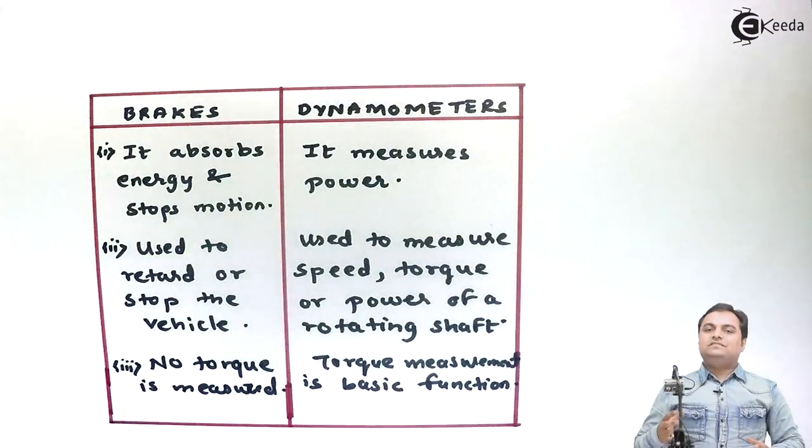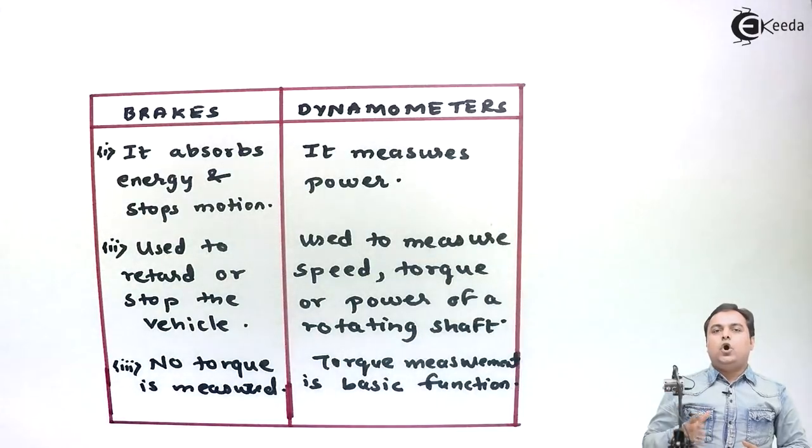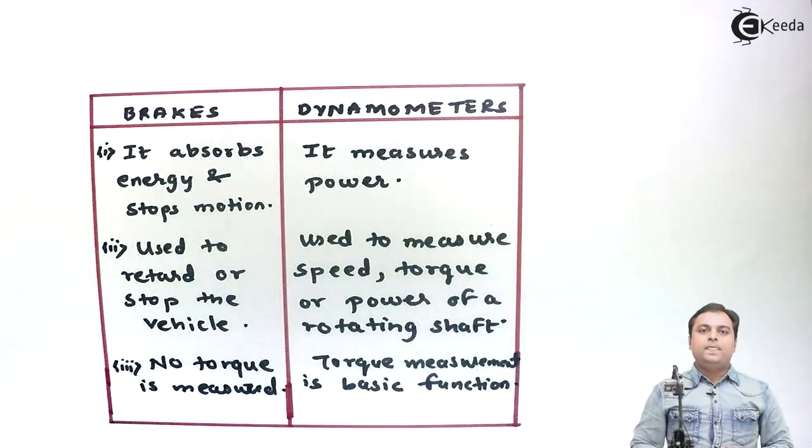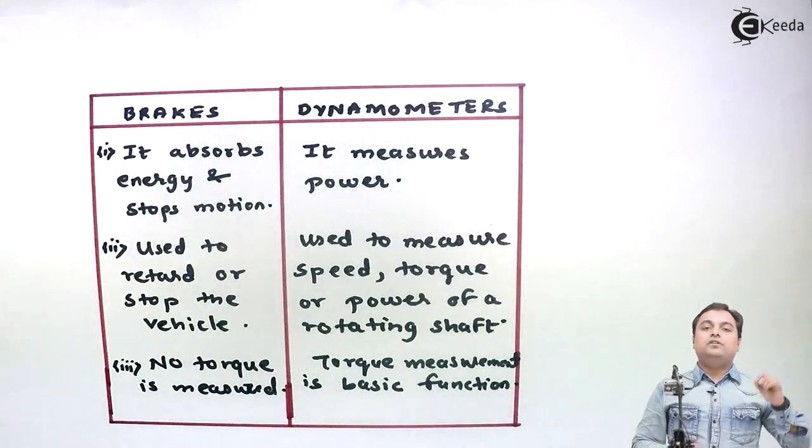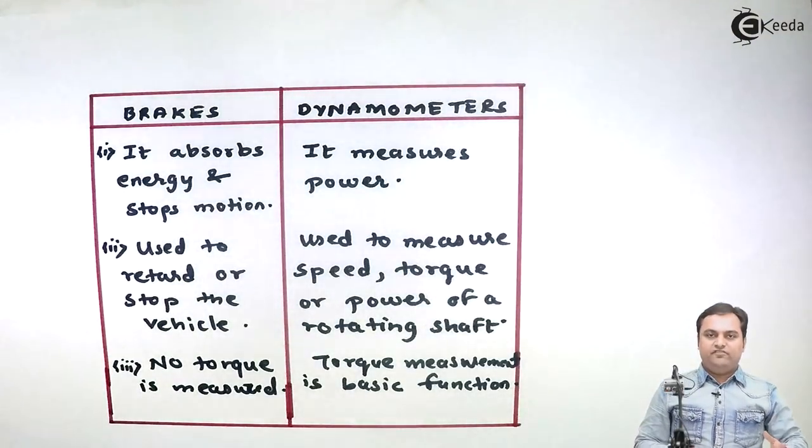Brakes are basically used to stop the motion or to control the motion of a moving body, mostly used in vehicles. Whereas dynamometer is used as a power measuring machine which can stop the rotating shaft if possible.